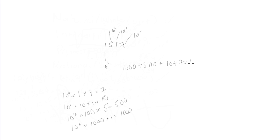Now we add all these numbers together: 1,000 plus 500 plus 10 plus 7 equals 1,517. That doesn't seem convenient when converting decimal to decimal, but it becomes very convenient when working with hexadecimal, octal, and binary. The reason we use decimals is that it is the easiest number system to work with by far. Our brains have been trained since we were young to use the decimal system, so 1517 is immediately meaningful to us.